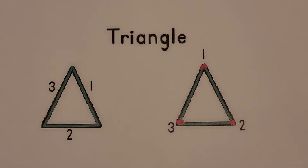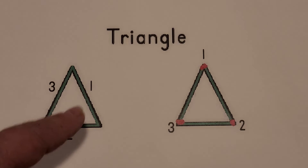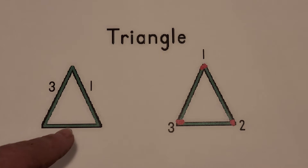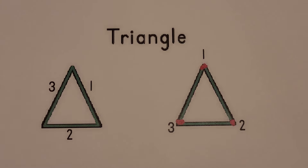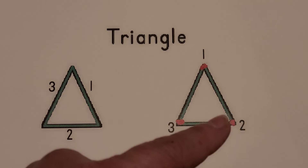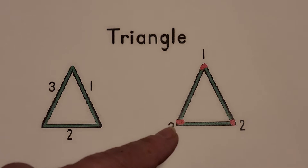This is a triangle. A triangle has three sides. One, two, three. And a triangle has three corners. One, two, three.